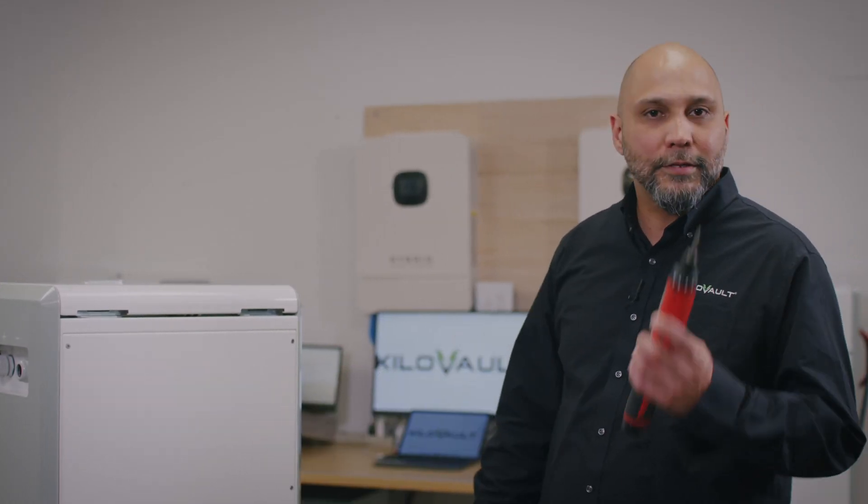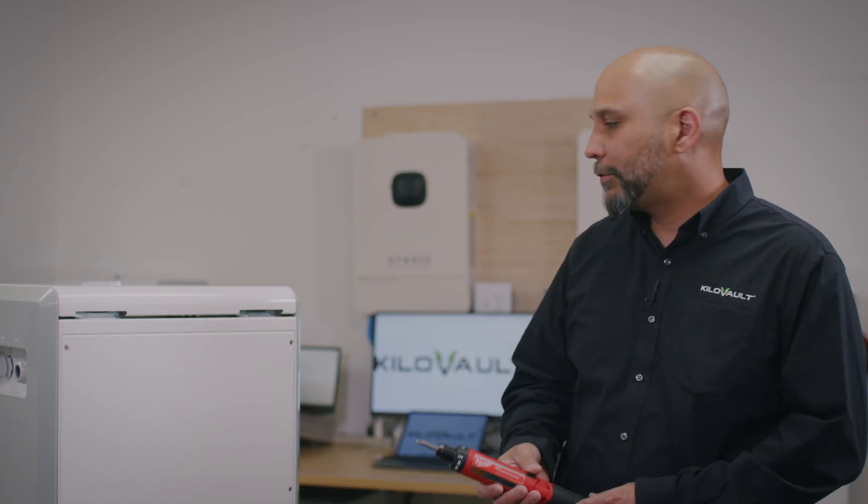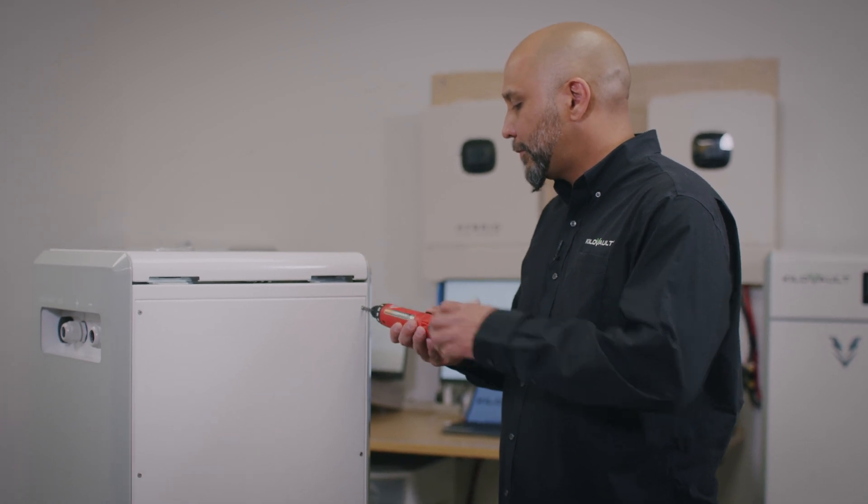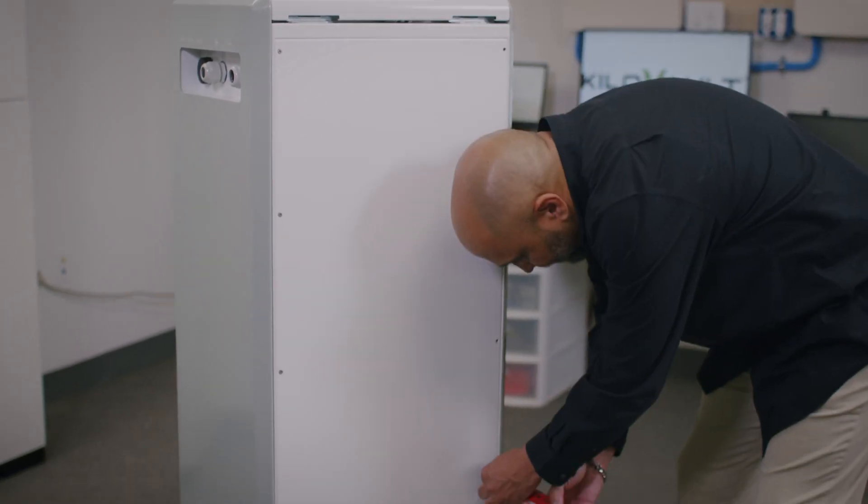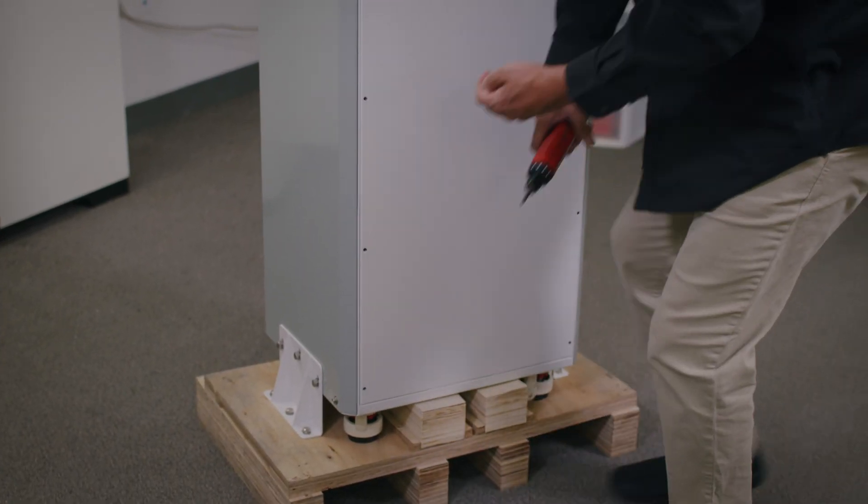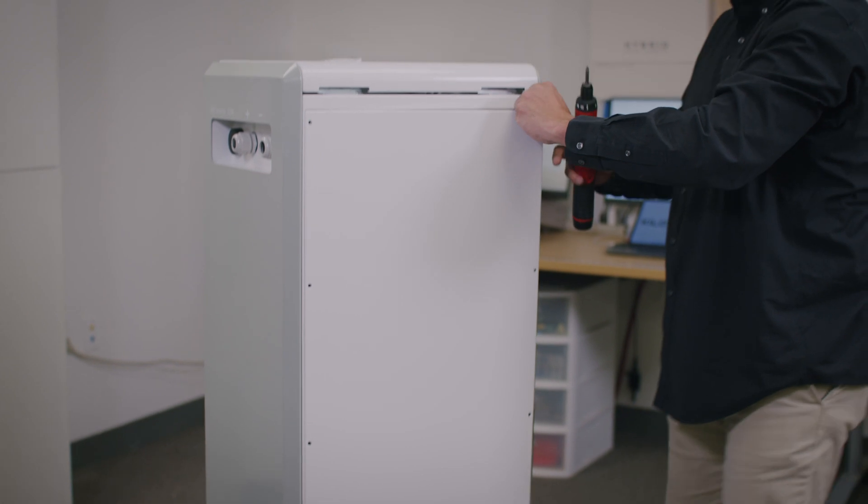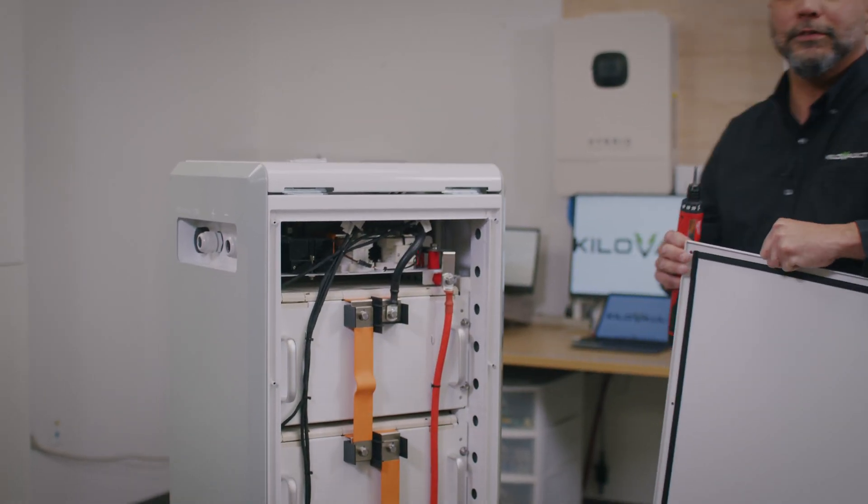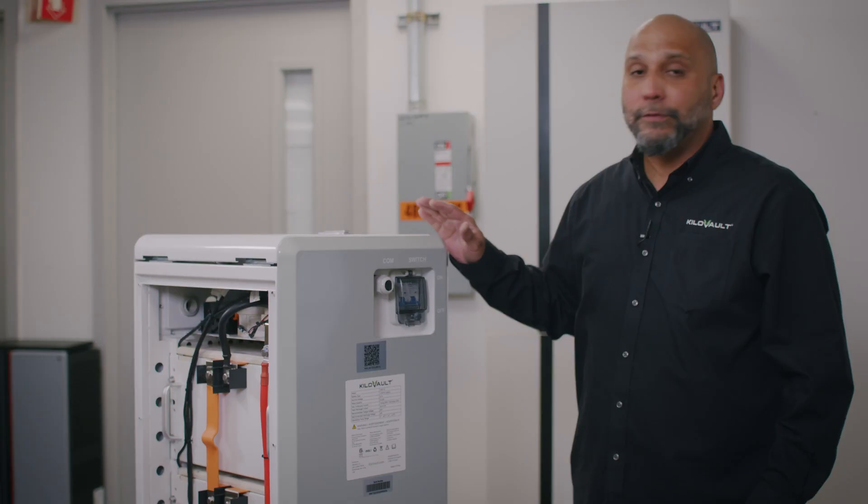We're going to start by removing the screws on the back of the cover with a simple Phillips screwdriver, either electric or manual, whatever you have on hand. Start by removing the screws and the cover just comes off easily, exposing the four modules.